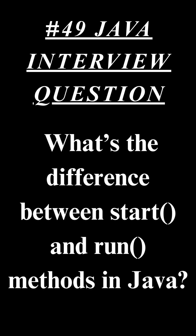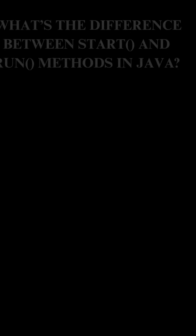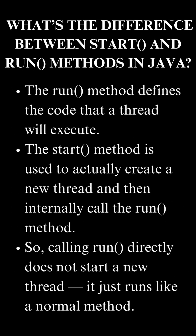Hello everyone, welcome back to the channel. In today's Java interview question, we will learn what's the difference between the start method and run method in Java. The run method defines the code that a thread will execute. The start method is used to actually create a new thread and then internally call the run method. So calling run directly does not start a new thread — it just runs like a normal method.